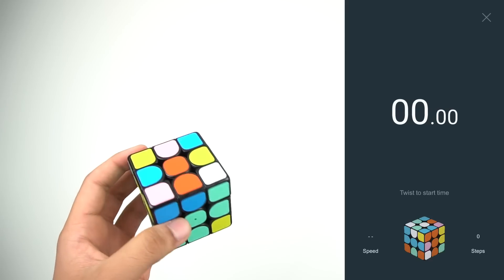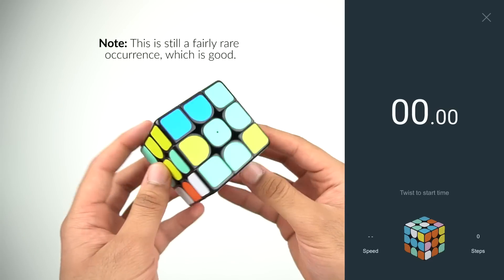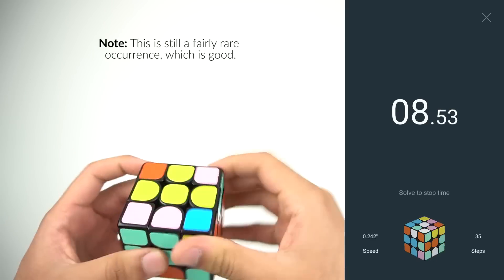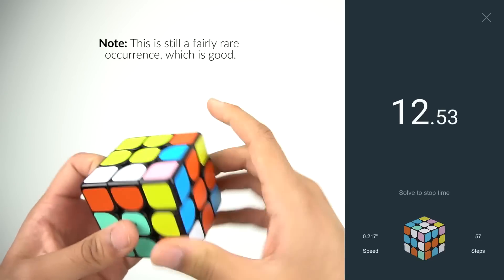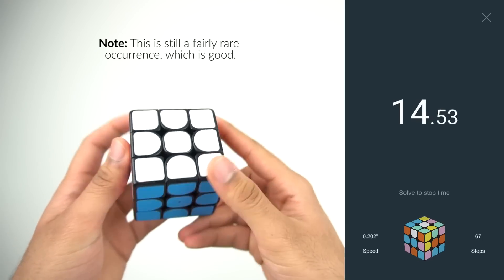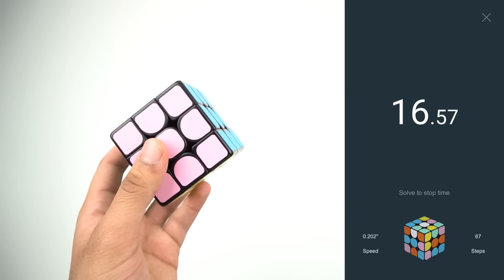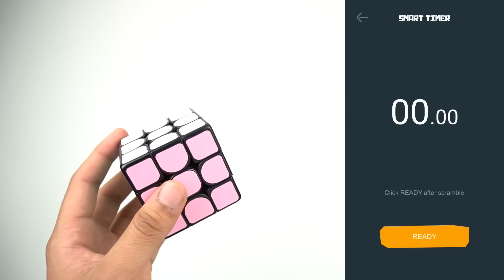So when I solved it physically, the timer wouldn't stop because the app still thought that it was scrambled. As long as you scramble at a normal speed, I've found it to be alright. The issue hasn't really happened during a solve for me yet, which is good.